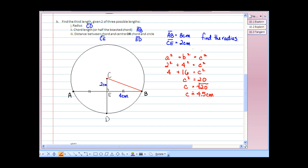Thus, we know that the radius is approximately 4.5 centimeters in length. So, the radius represented by BC, but also remember the radius is represented by CD.